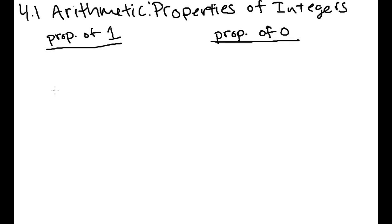Now we're going to talk about the properties of two somewhat special integers, 1 and 0. The first thing you need to know about the number 1 is 1 times any number n is equal to n.